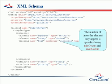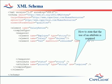You can set a minimum number using minOccurs. If your element is optional, use a minOccurs of zero. Attributes are optional by default. You can state that an attribute must appear on the element simply by stating that its use is required.